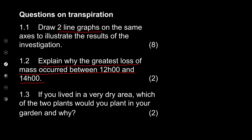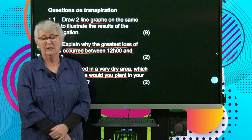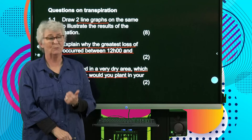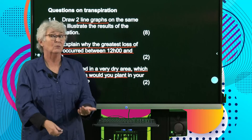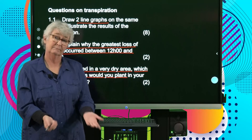The third question requires you to think: if you lived in a dry area, which of the plants would you plant and why? Use your common sense — the table shows one plant loses so much water you'd have to keep watering it, while the other plant you wouldn't have to water every day. To make sense and save water, you would plant plant number one — the one with small leaves, thick cuticle and hairy epidermis.